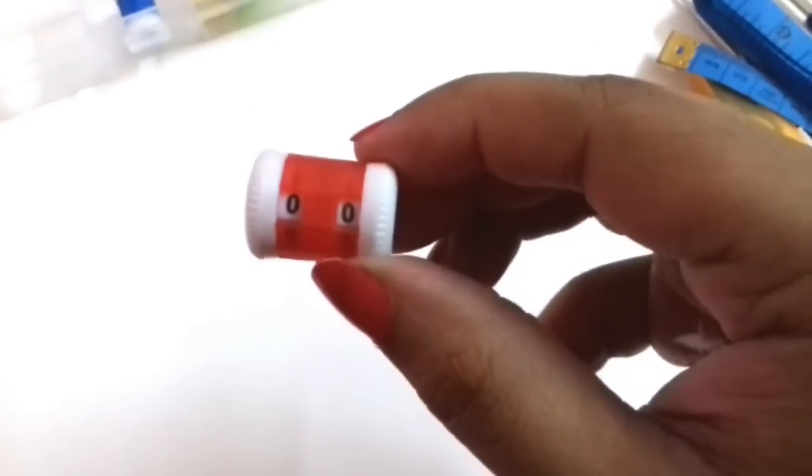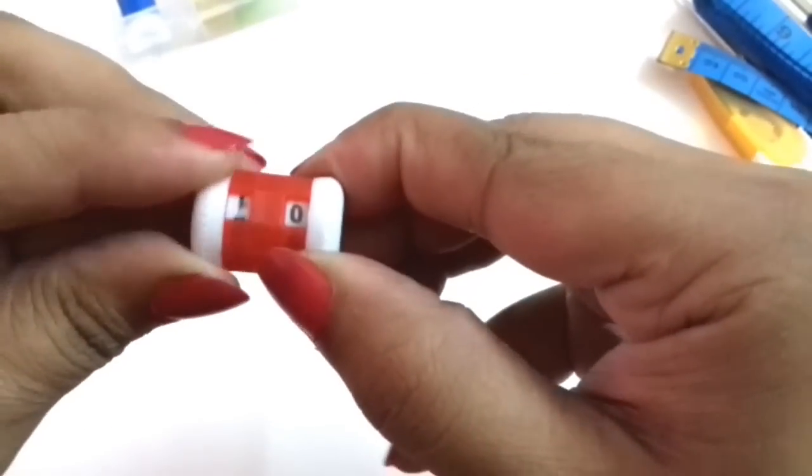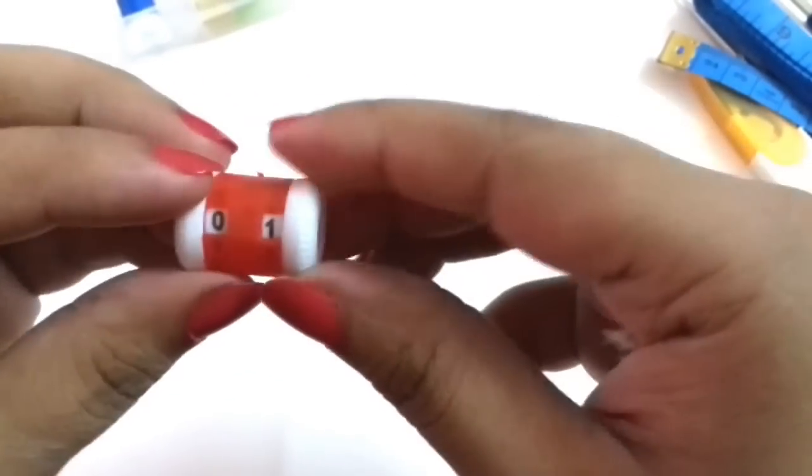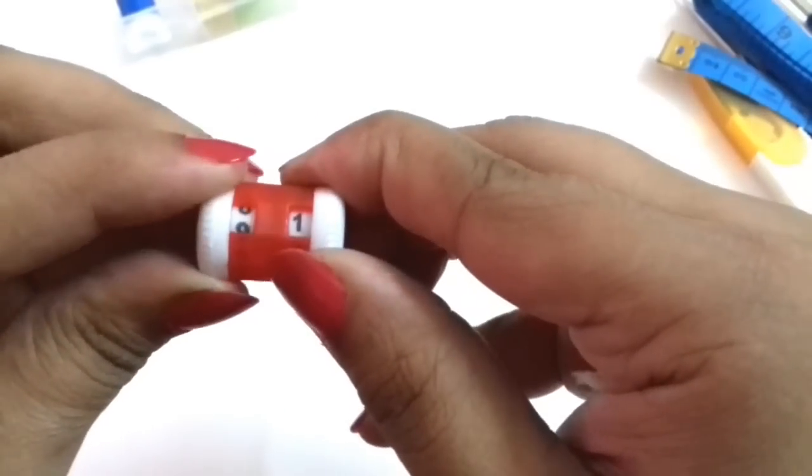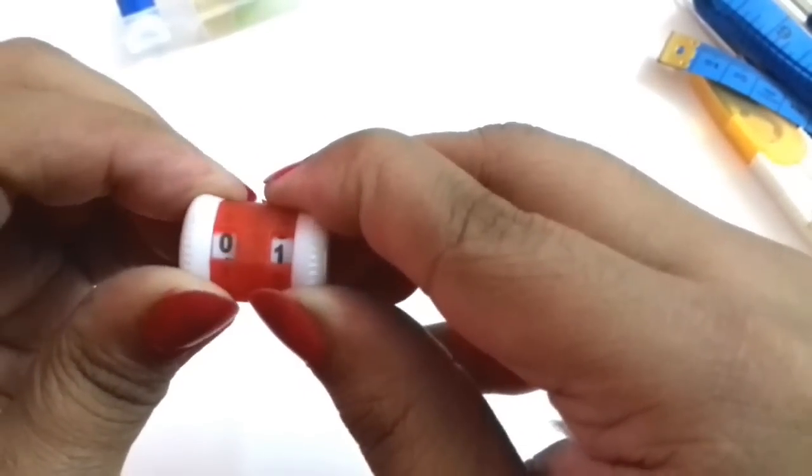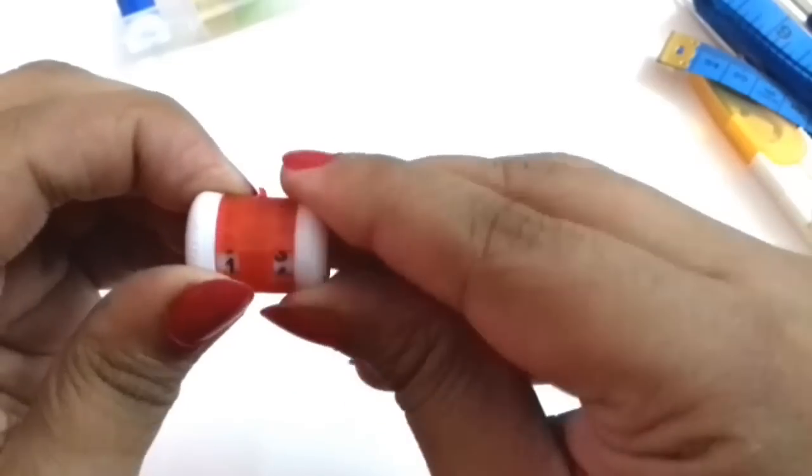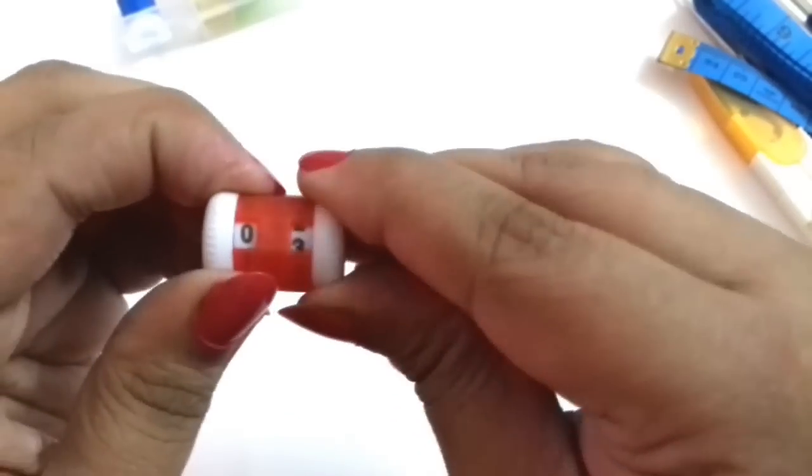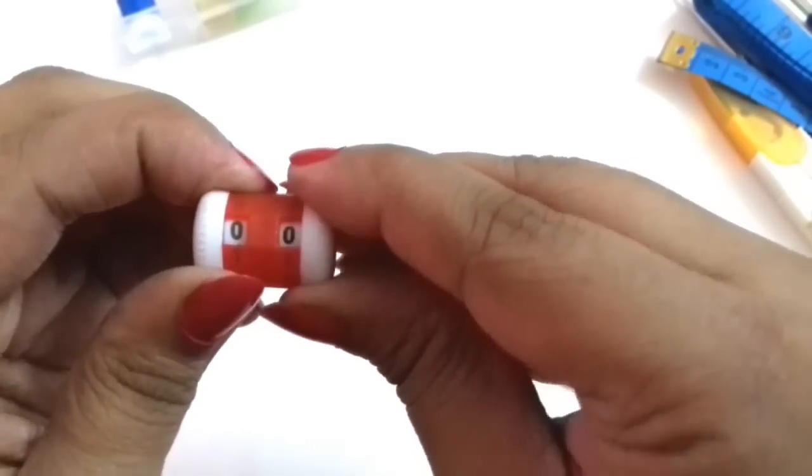And this is a row counter, so there are two row counters. If you search on Amazon crochet row counters then you will get 2 row counters for 250 rupees. Inside this you have numbers from 0 to 9.